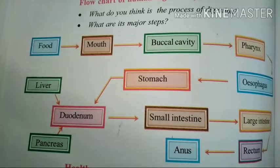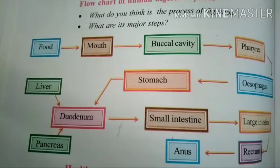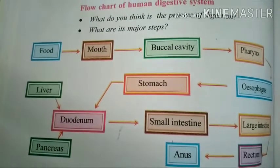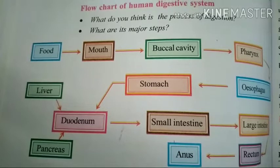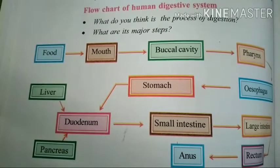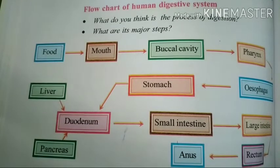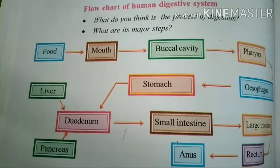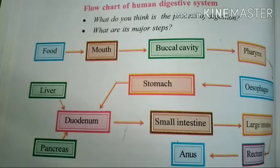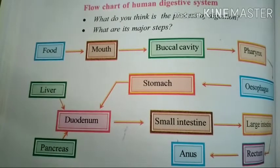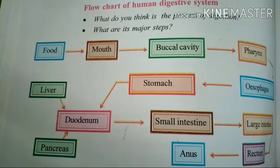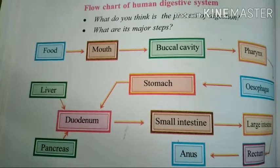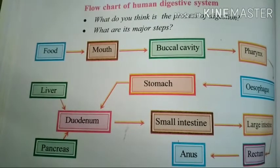What do you think happens in the process of digestion? How does the digestion process go on? What parts are involved in digestion? The major steps involved are ingestion, digestion, absorption, and defecation. First of all, from the mouth — food comes into the mouth. With the help of salivary glands, teeth, tongue, and cheeks, food enters the buccal cavity.